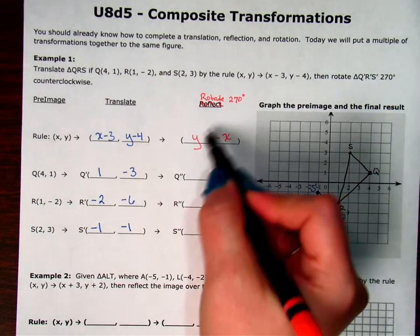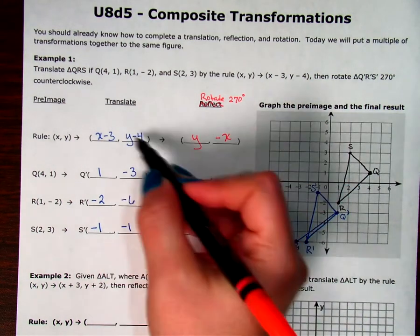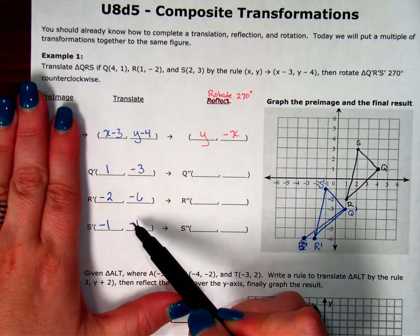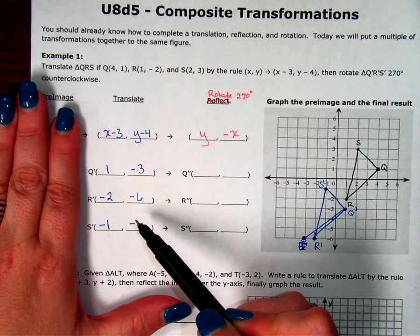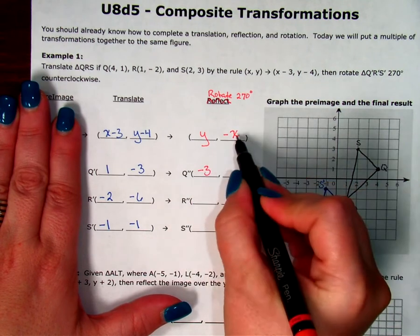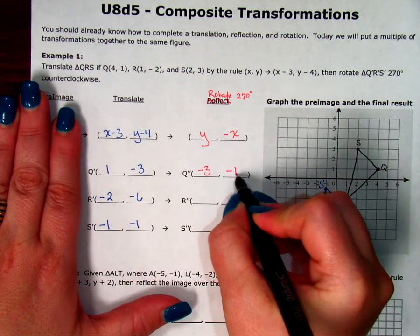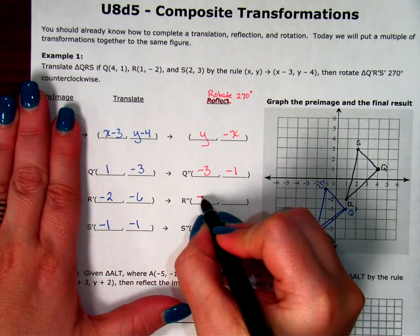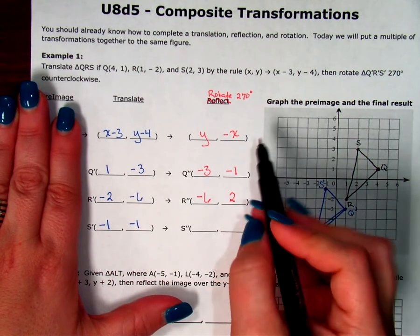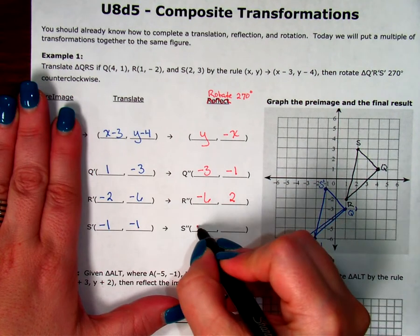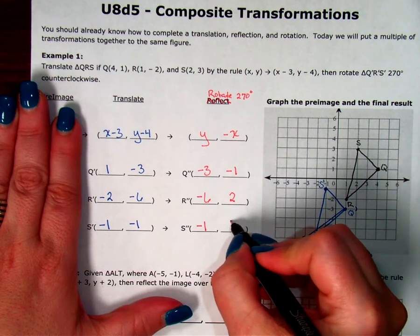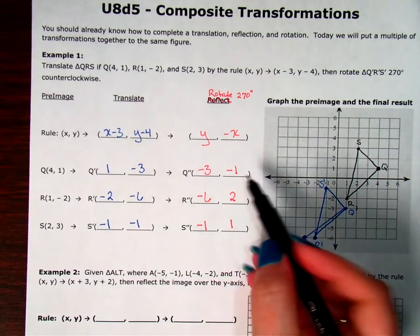And, we are applying this after we've applied this. So, I'm not going to use these points anymore. I'm going to apply this information to my Q prime, R prime, S prime. So, my y value is negative 3. The opposite of x is negative 1. My y value is negative 6. The opposite of x is a positive 2. My y value is a negative 1. The opposite of x is positive 1.